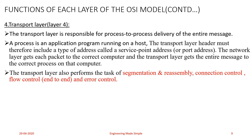Connection control: the Transport layer can be either connectionless or connection-oriented. A connectionless Transport layer treats each segment as an independent packet and delivers it to the Transport layer at the destination machine. A connection-oriented Transport layer makes a connection with the Transport layer at the destination machine before delivering the packets. After all the data packets are transferred, the connection is terminated automatically.